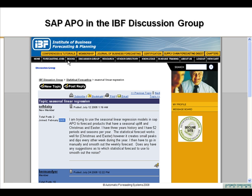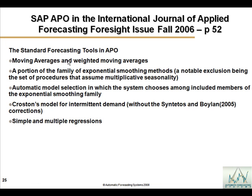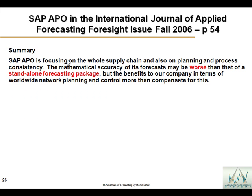There's a post in the IBF chat room that talks about SAP having problems with Christmas and Easter effects, which are typical questions heard at conferences. An article from the International Journal of Applied Forecasting Foresight, fall 2006, page 52, walks through the simple methodology of SAP, concluding that the mathematical accuracy may be worse than that of a standalone forecasting package. The question is: do you really want the first step of your supply chain to be just okay, rather than excellent?